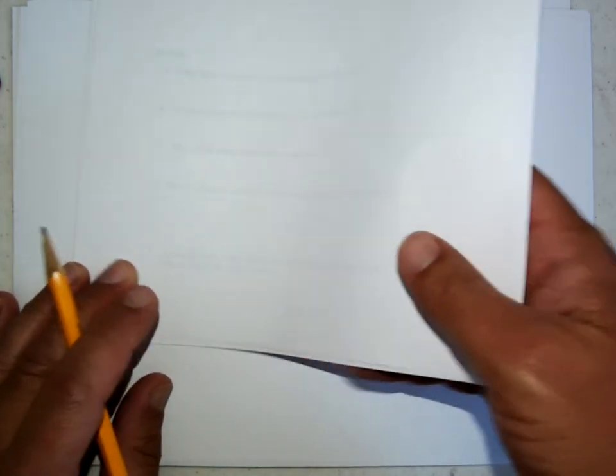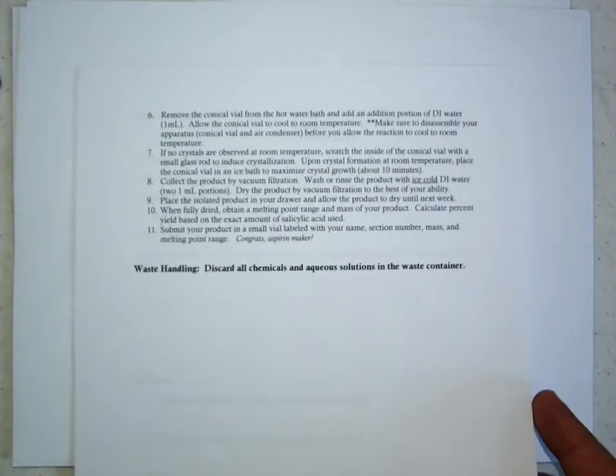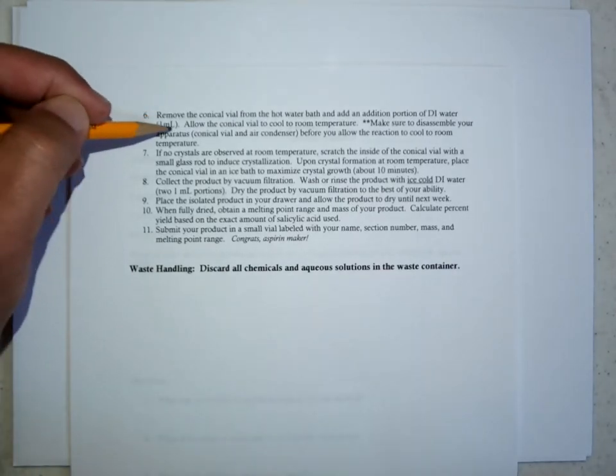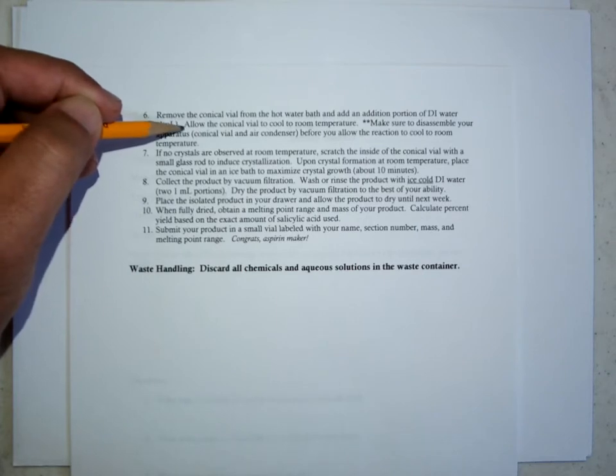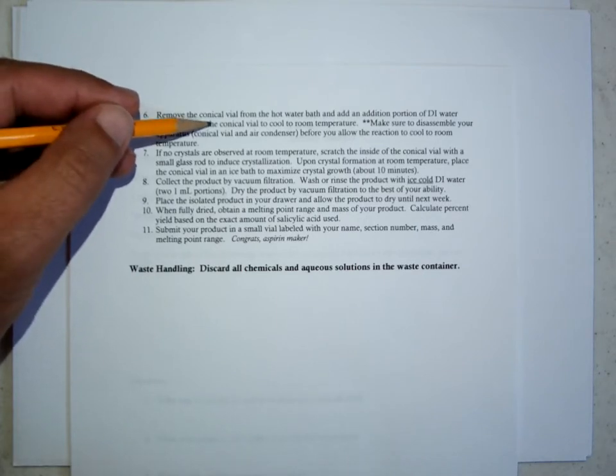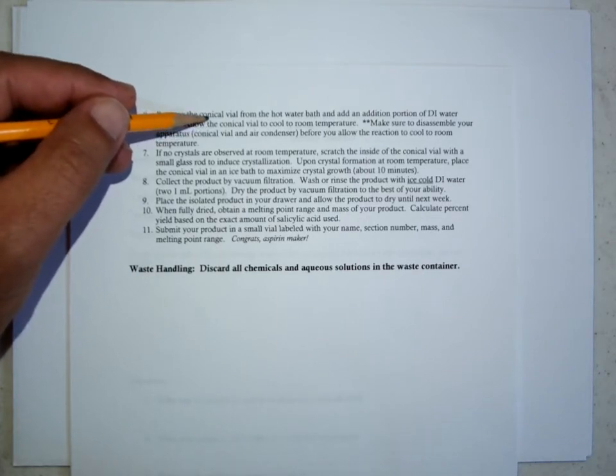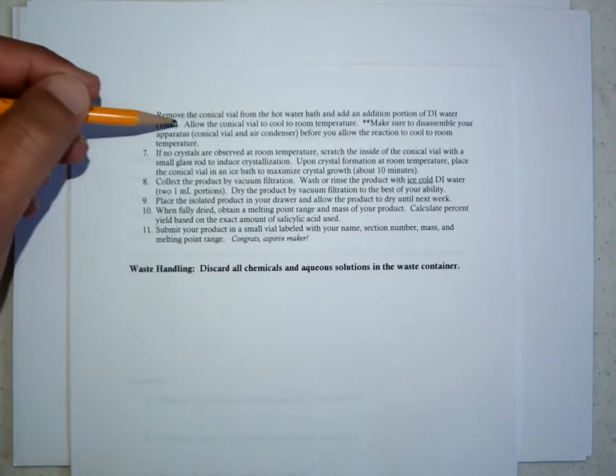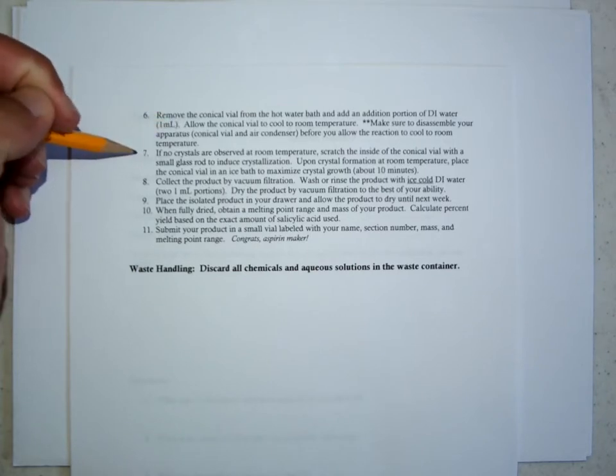And then the beauty of this reaction, one of the beauties of this reaction, is that purifying and isolating the product is super simple because if you just allow the conical vial and its contents to cool to room temperature, then take the condenser off of this, but just allow this conical vial and its contents to cool to room temperature, then crystals should form. Because in this small amount of solvent, this amount of acetyl salicylic acid will not be soluble.